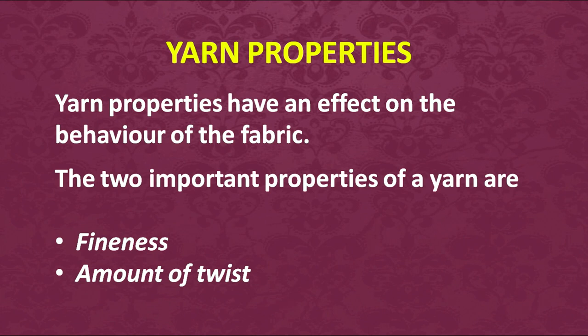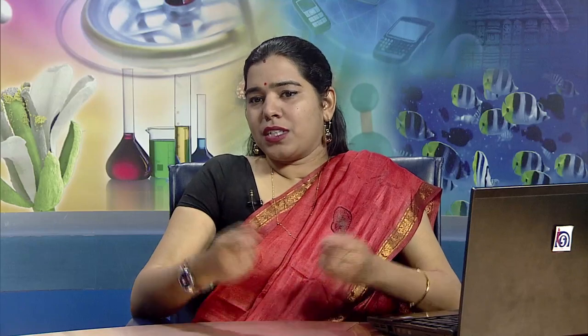The two most important properties of a yarn are fineness and the amount of twist — these are interrelated. The more the twist, the finer the yarn: more twist makes yarn finer, smoother, and stronger. A looser yarn has less twist and becomes thicker and a little fluffy. We can have two-ply yarns — two fibers twisted together — or three-ply yarns — three fibers twisted together. This arrangement is known as simple single yarn, giving uniform twist throughout.